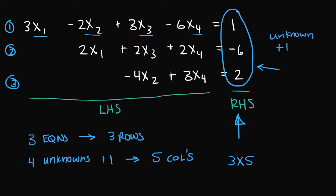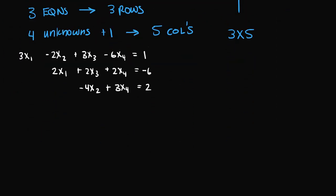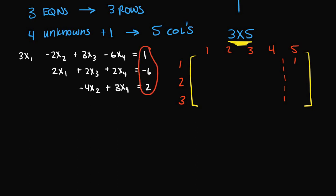Let me scroll down to make more room and rewrite the system of linear equations. We know our matrix is going to be three by five — three rows and five columns. Our fifth column is the column of all the constant terms on the right-hand side, so we can plug those in right away: we have 1, negative 6. Column one corresponds to all the coefficients of x1, column two to x2, column three to x3, and column four to x4. Each row represents the corresponding equation number: equation one, two, and three.